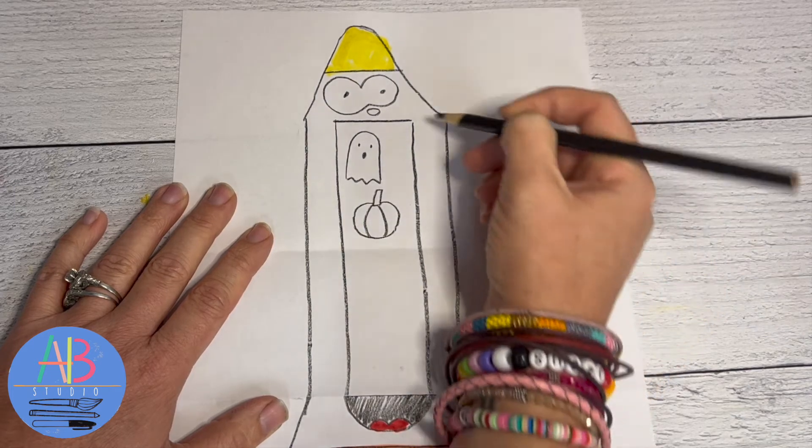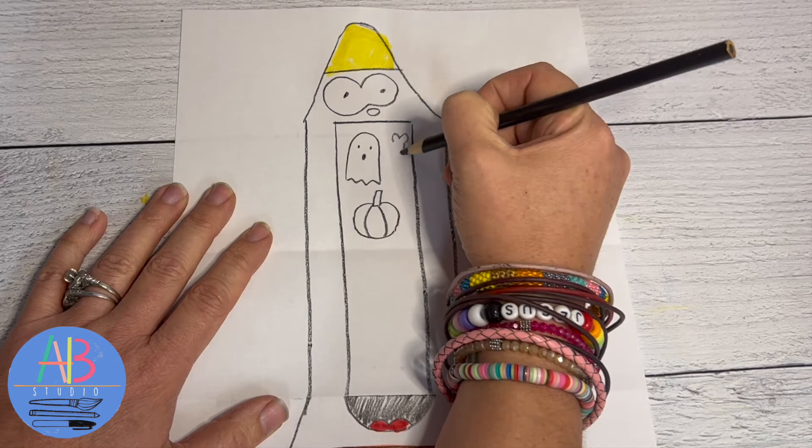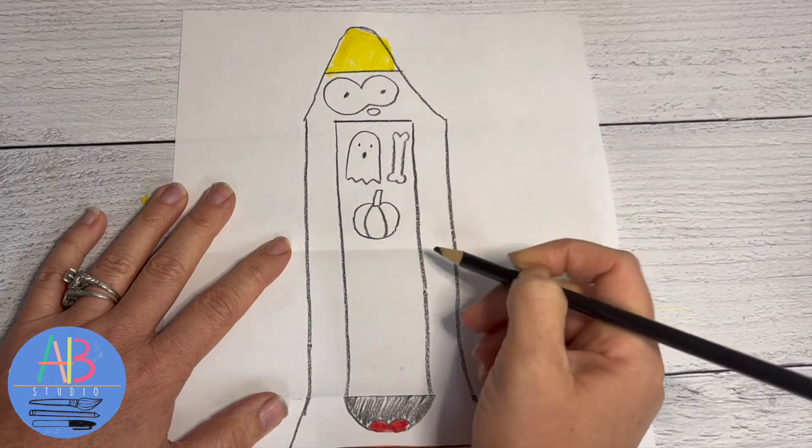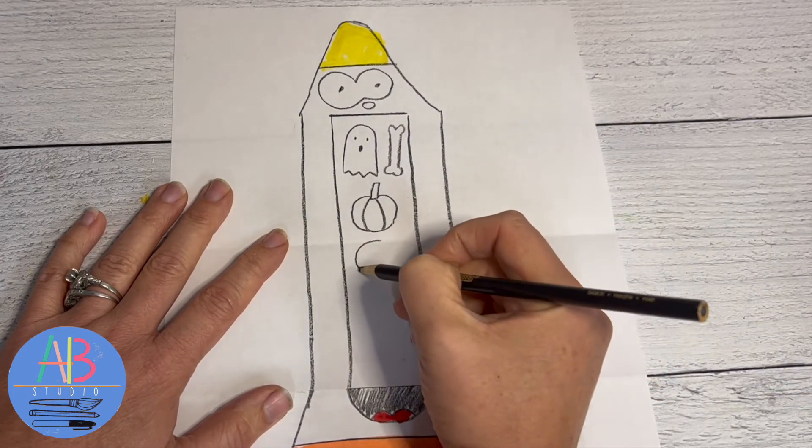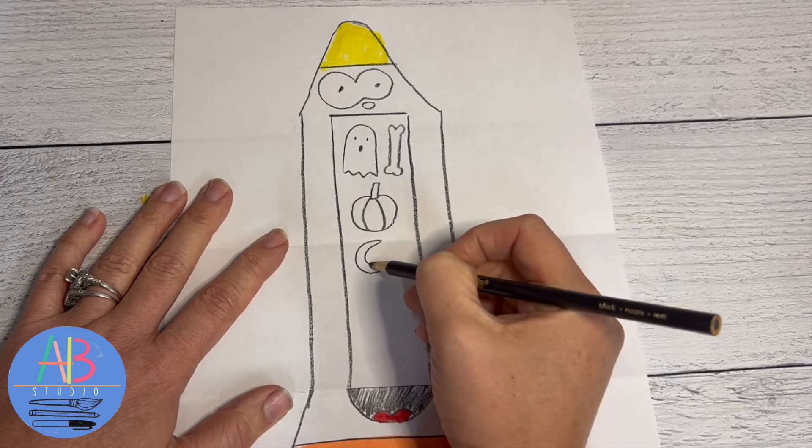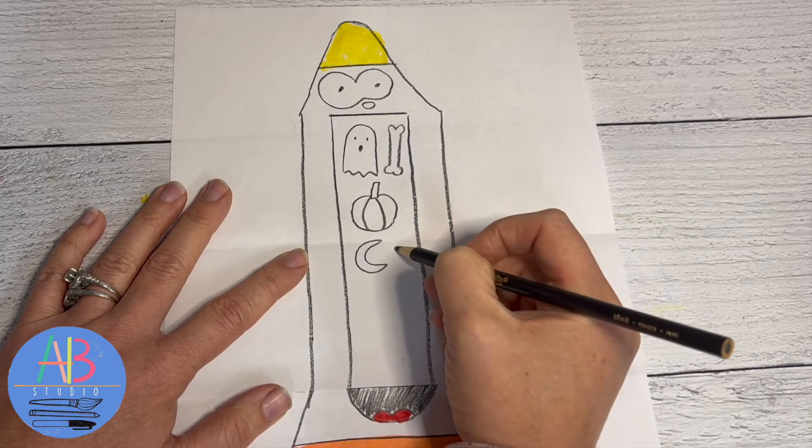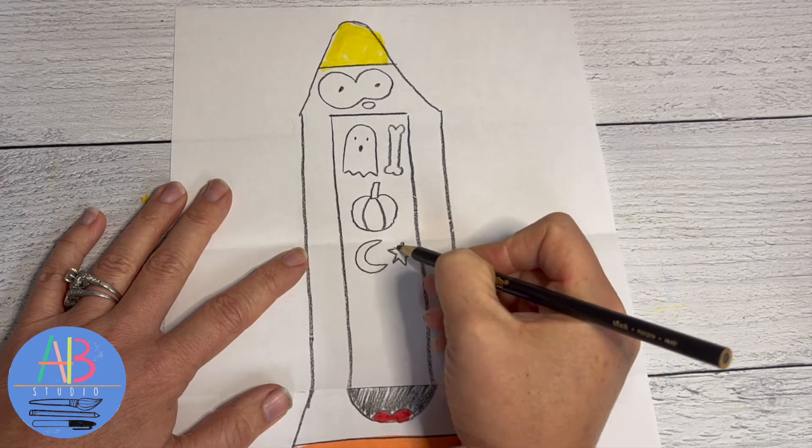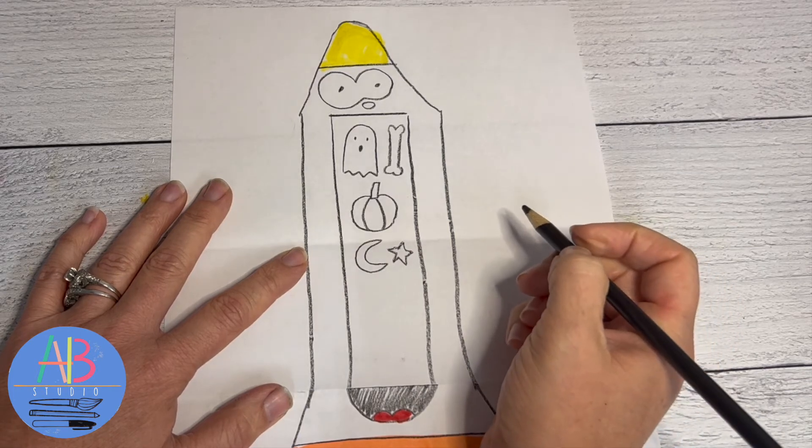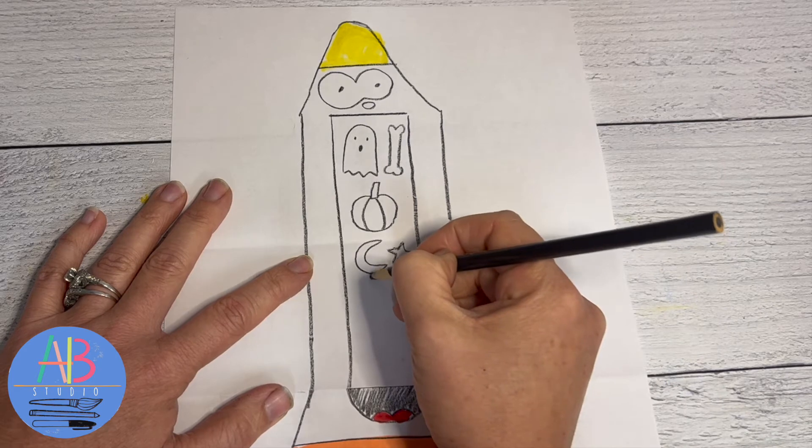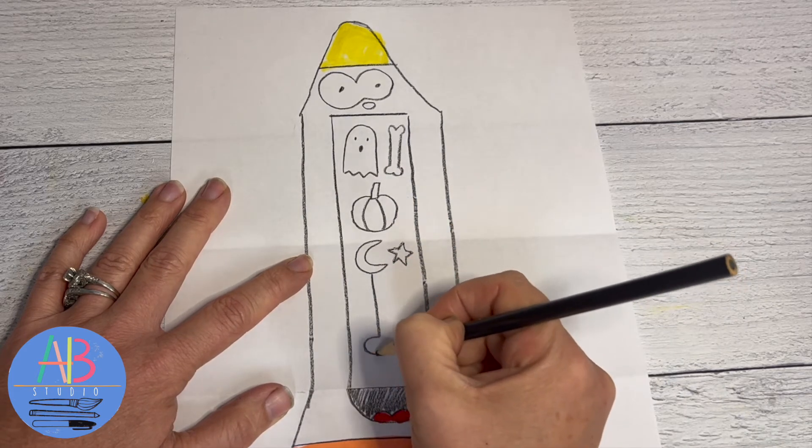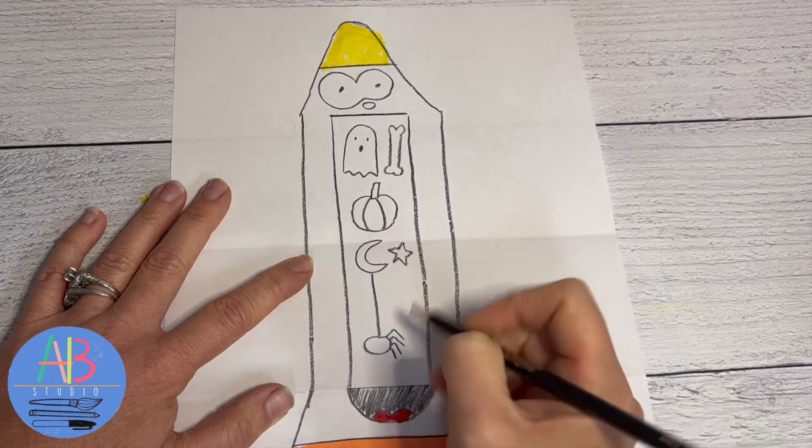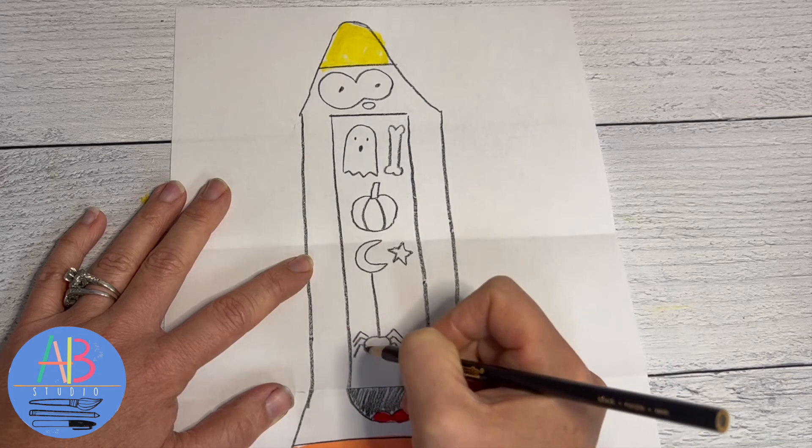I'm gonna do moon - C, C. Now stars. Stars can be tricky. My star is not very pretty, he looks a little lopsided but that's okay. What about a spider hanging off the moon? So I'm gonna draw a straight line and oval. Do you know how many legs a spider has? Eight. Four and four.